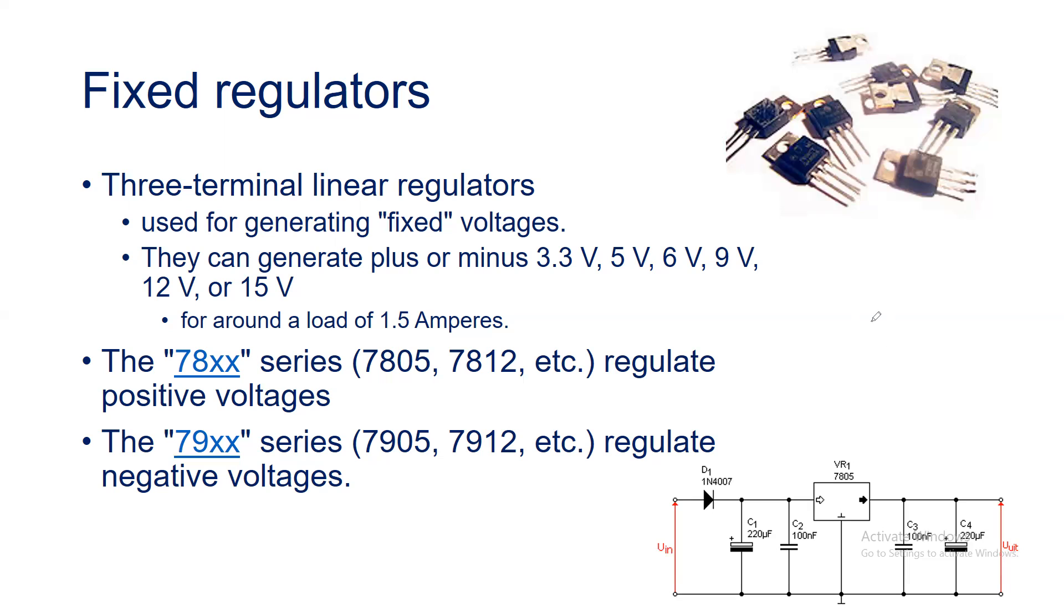Whenever you see an IC and on the body of this IC the number printed is 78xx, where xx are the two digits that specify the voltage it will offer at the output. The 78xx series are called positive voltage regulators. If you see 7805, it means this IC is able to generate 5 volts at the output. If you see 7812, the 12 stands for it will generate 12 volts at the output. Because it is 78, it is a positive voltage regulator.